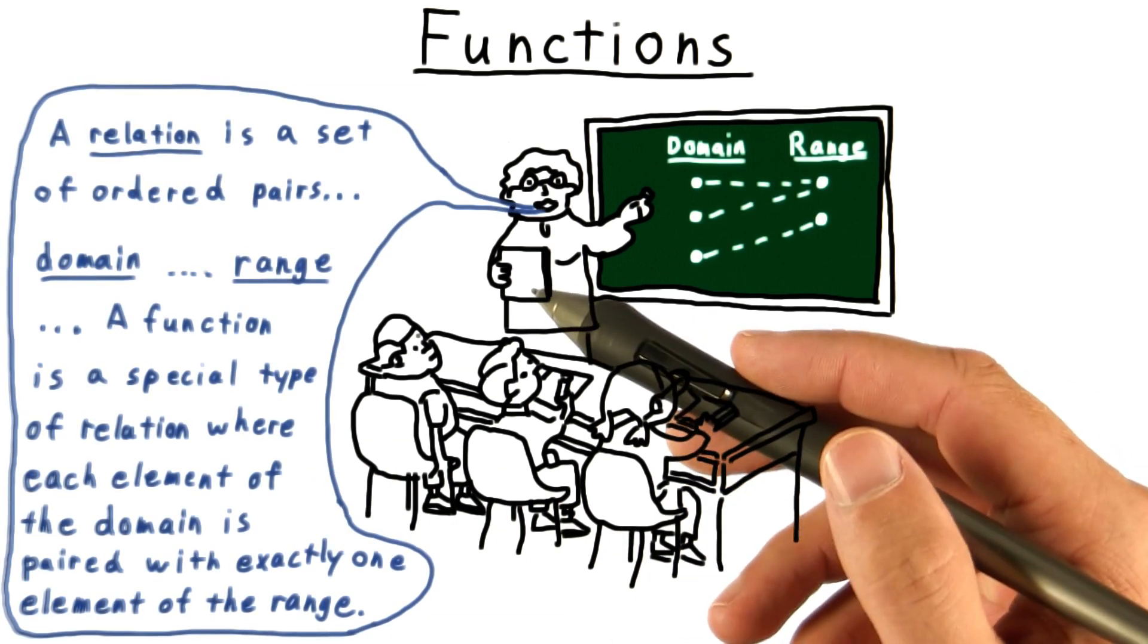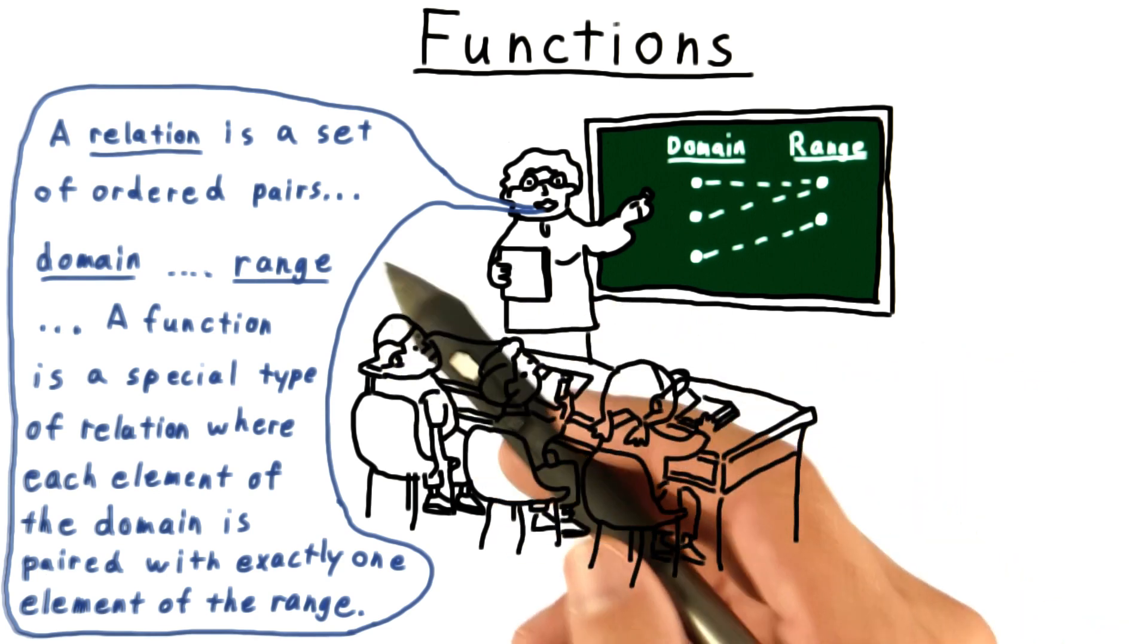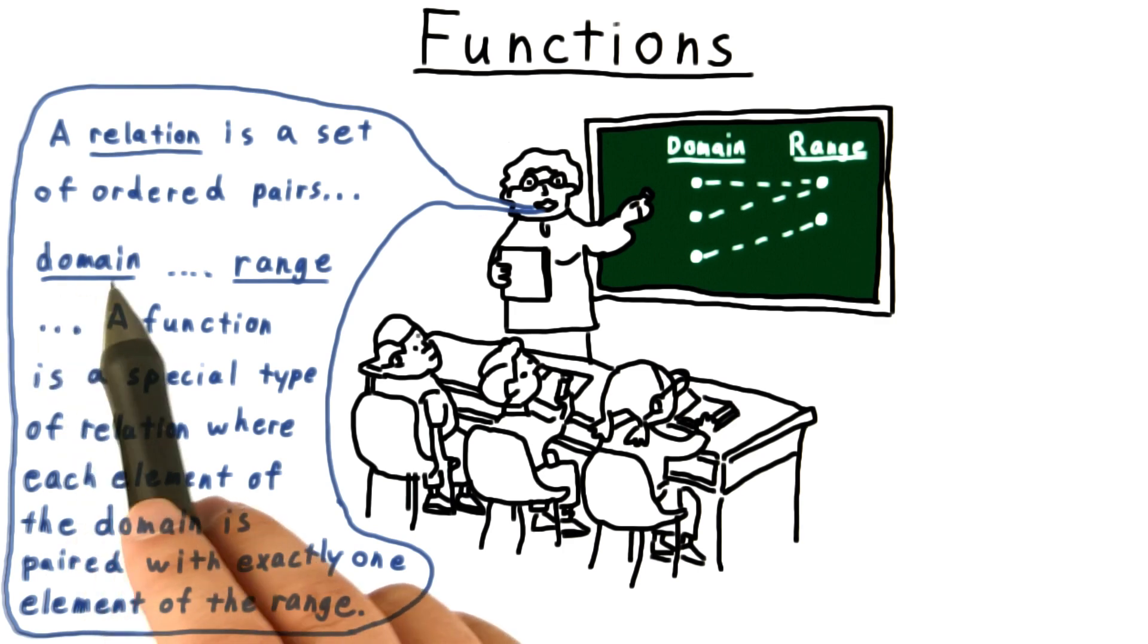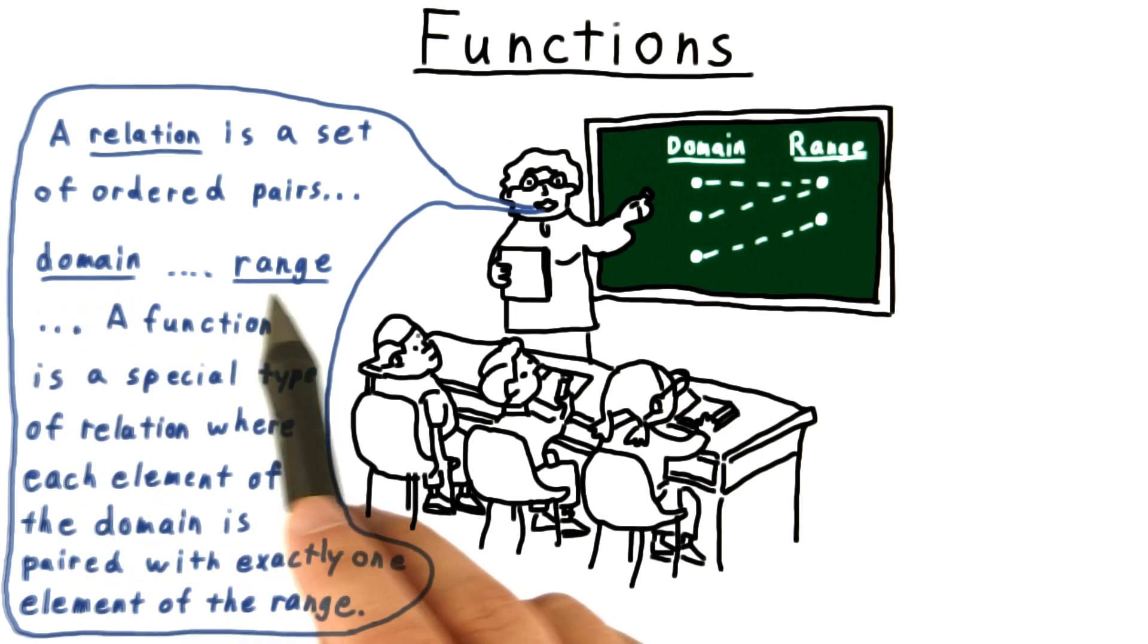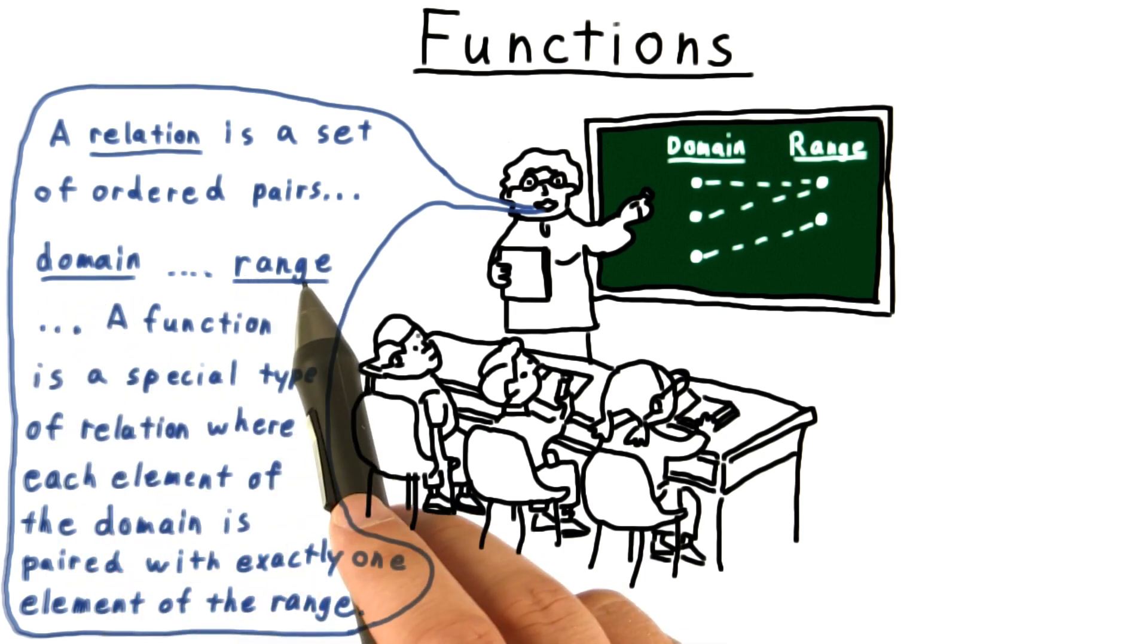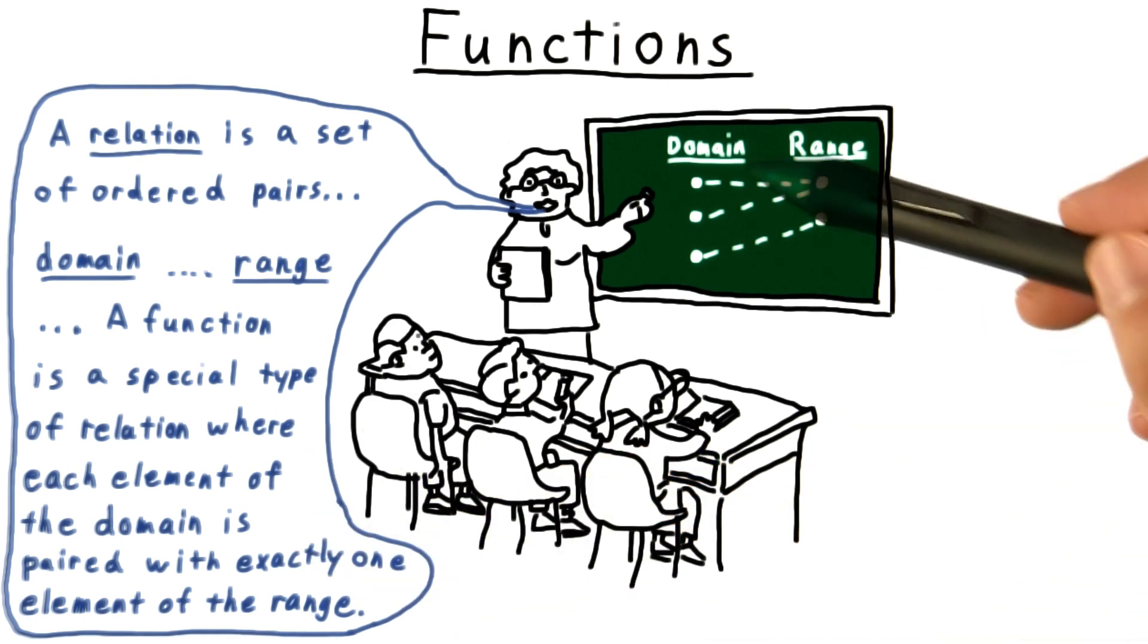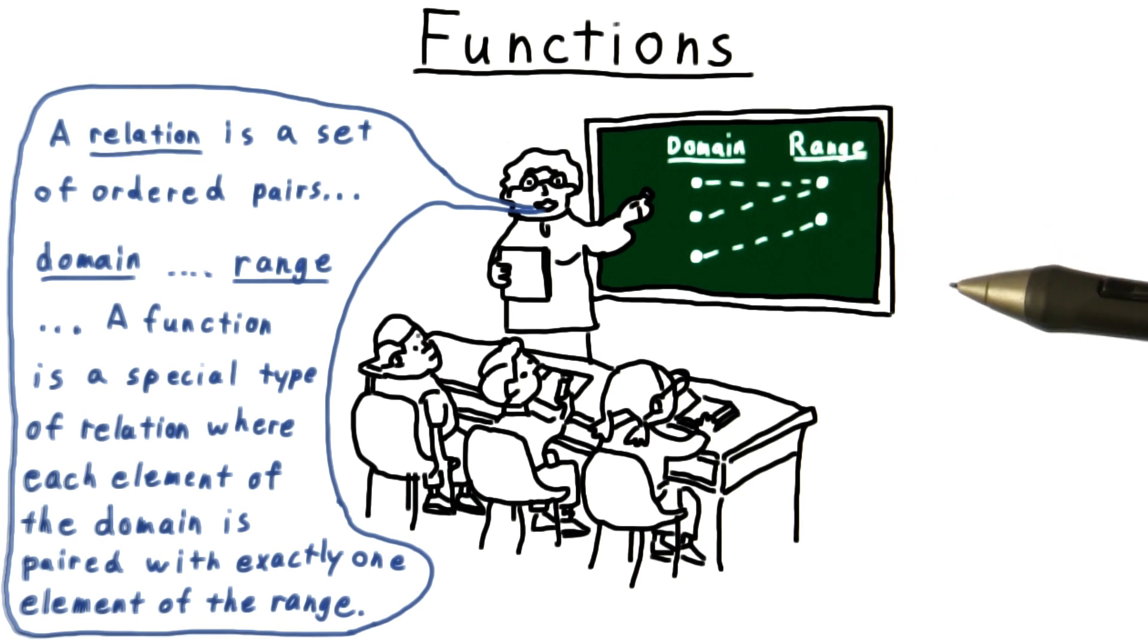The teacher begins by defining the notion of a relation, saying that it is a set of ordered pairs where the first element comes from a set called the domain, and the second comes from a set called the range. And a function then is a special kind of relation where each element of the domain is paired with exactly one element of the range.